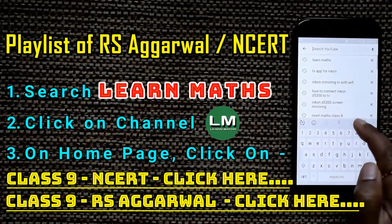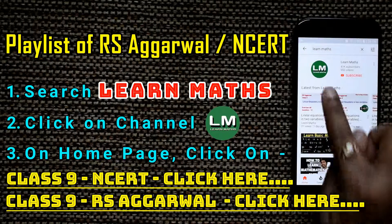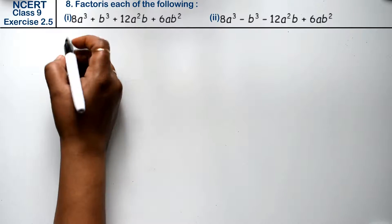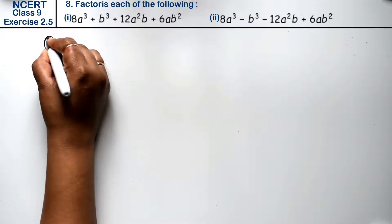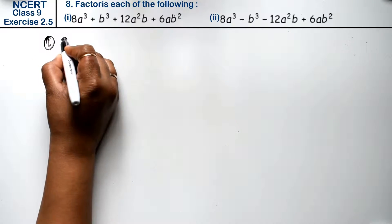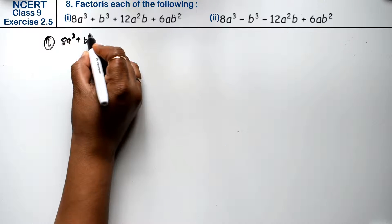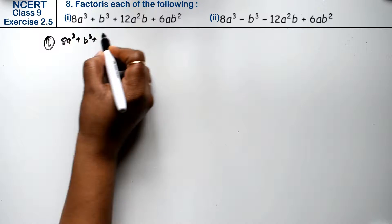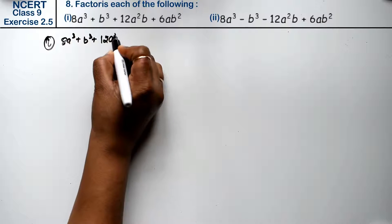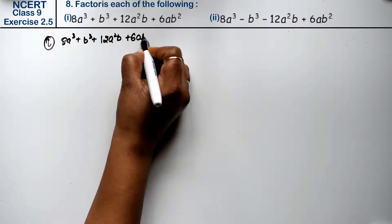Let's do question number 8 of exercise 2.5, the polynomial question. The first part is: factorize 8a cube plus b cube plus 12a square b plus 6ab square.